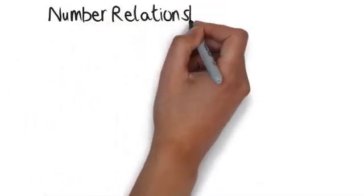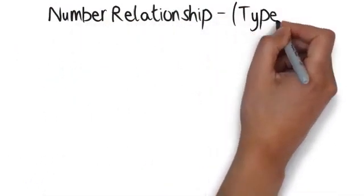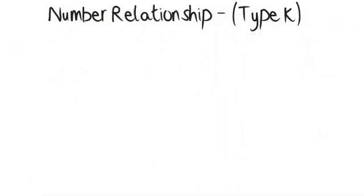Number relationships, type K. For these questions there will be three groups of numbers. The first two groups have three numbers, and the last group will have a number missing in the middle. For each group, the middle number is somehow related to the two numbers on the outside. For each group of numbers the rule is the same. These questions want you to work out what number is missing from the third group.